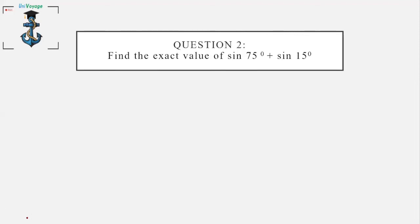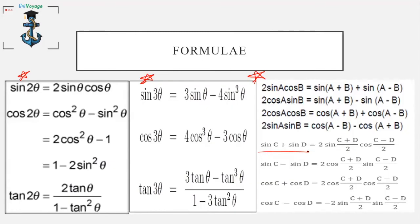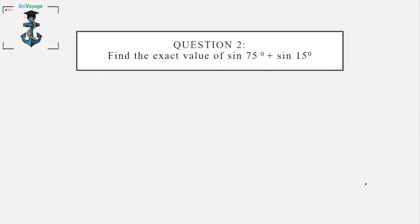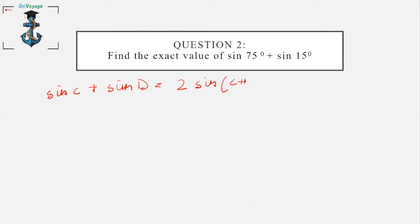Question 2 says we're going to find the exact value of sin75° + sin15°. There is a formula for sinC + sinD which we are going to use here. sinC + sinD = 2sin((C+D)/2)·cos((C-D)/2).